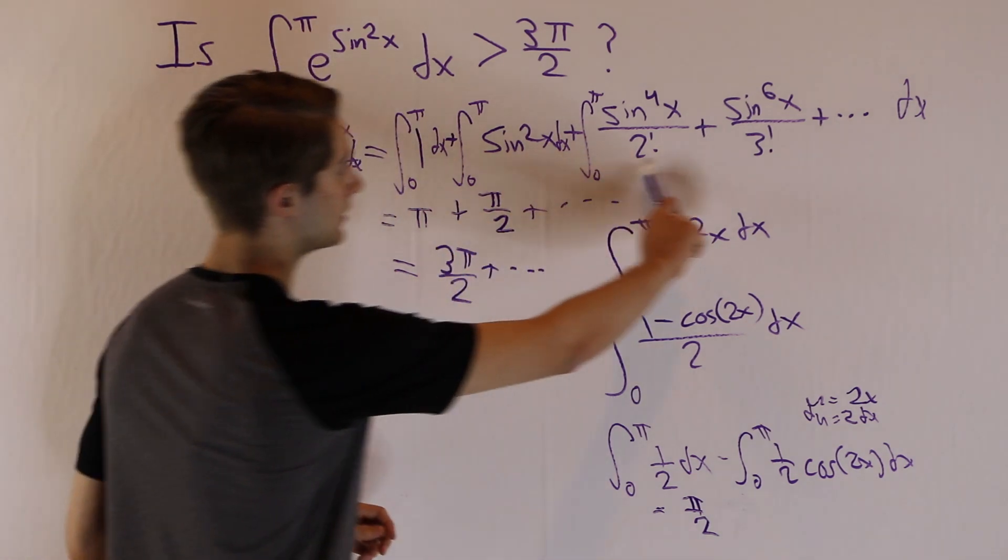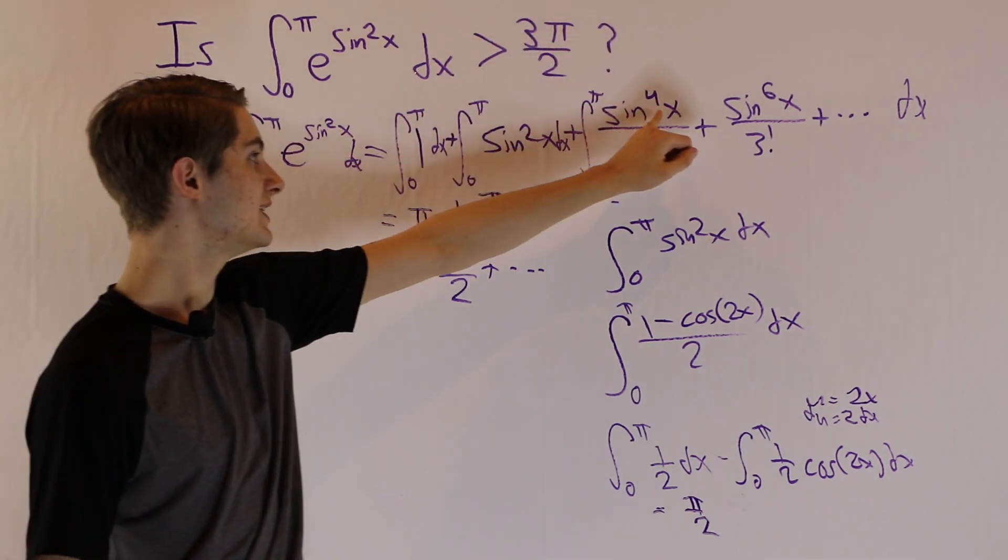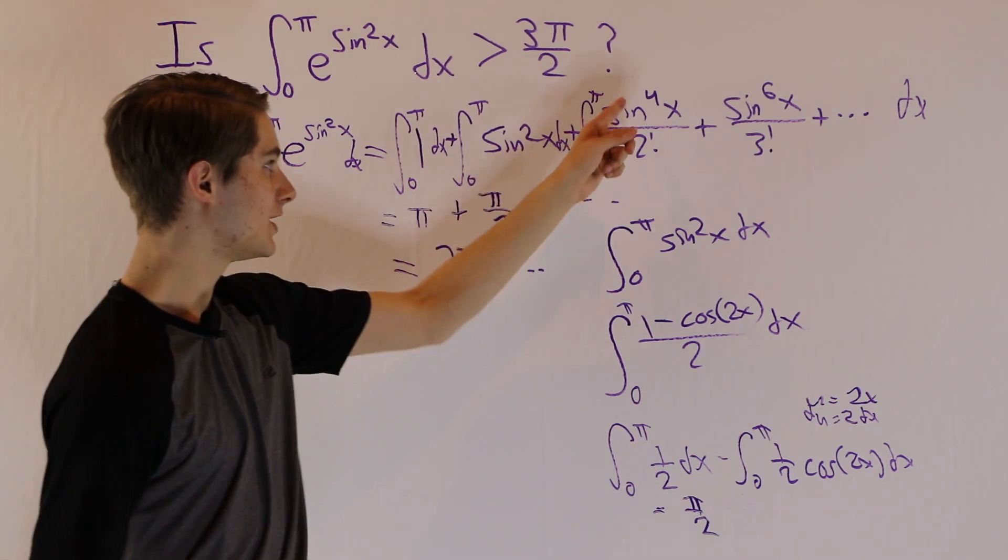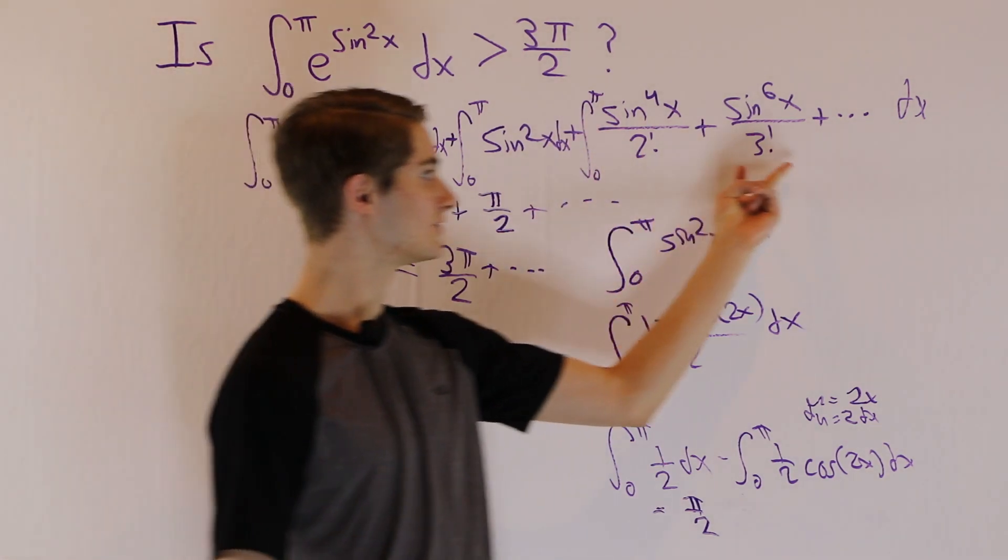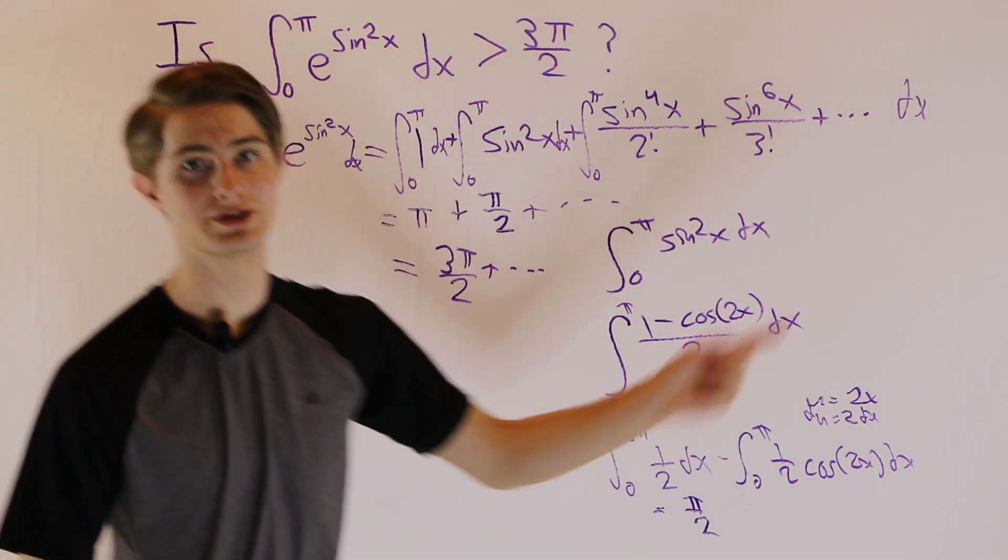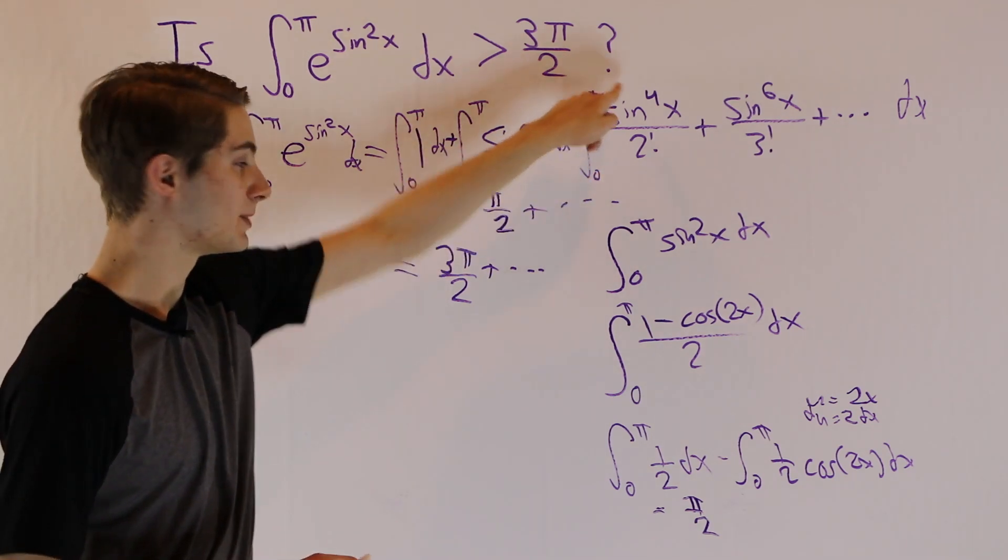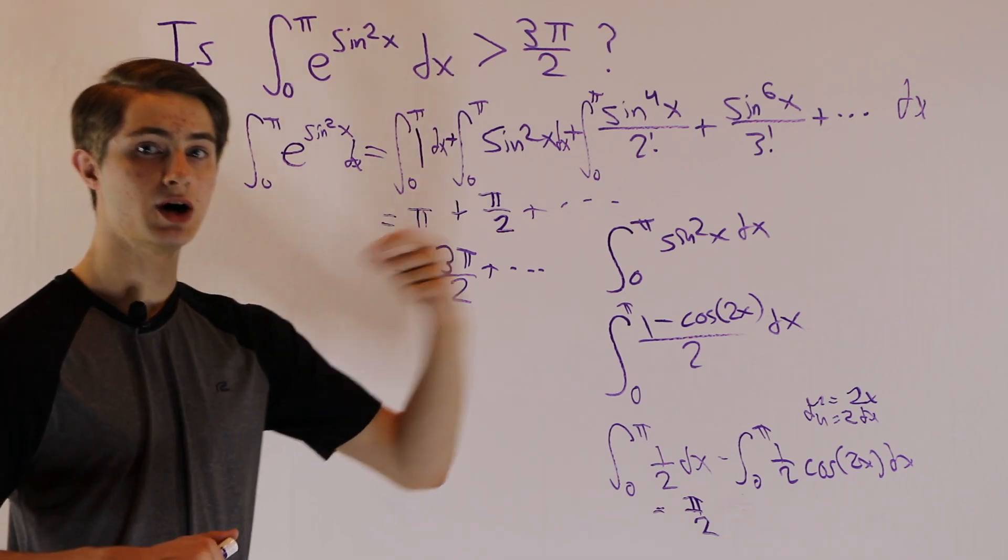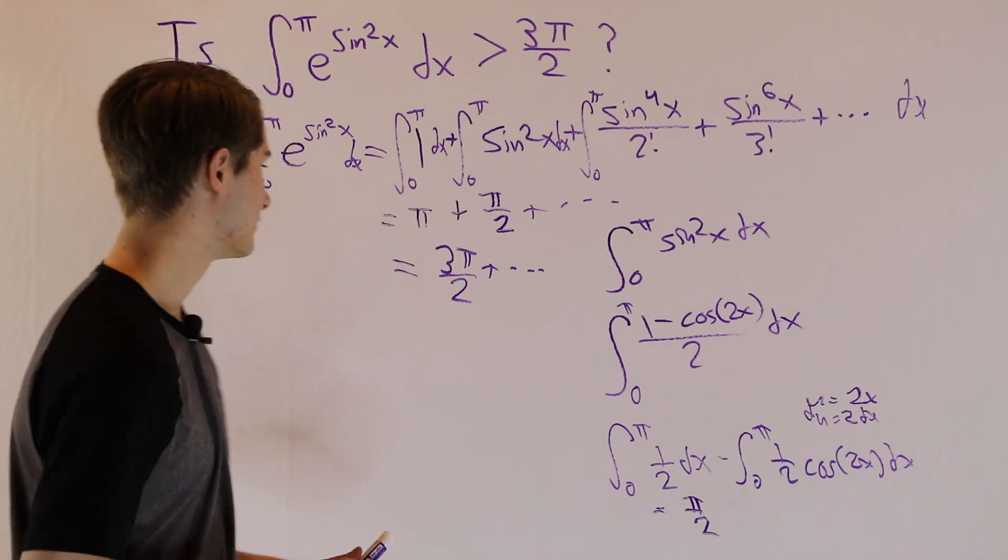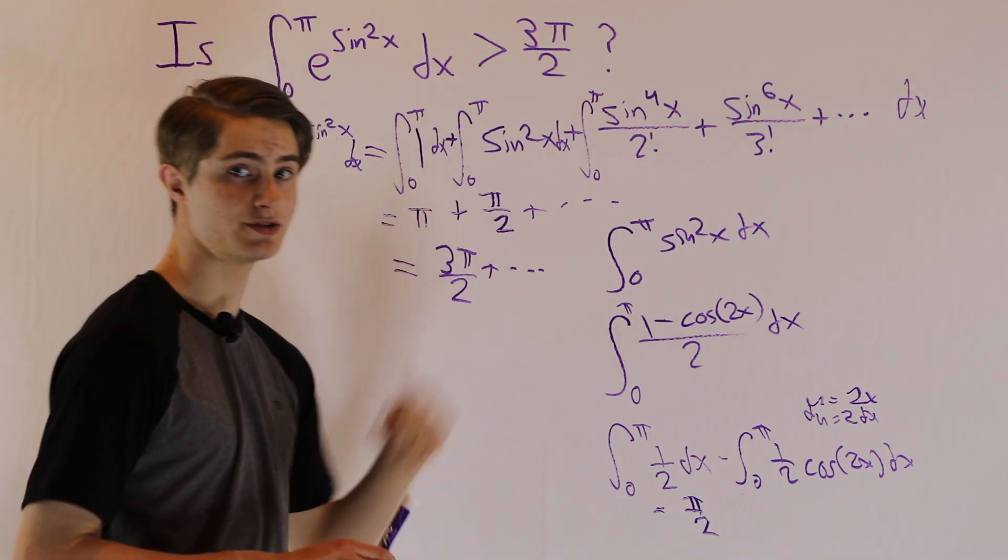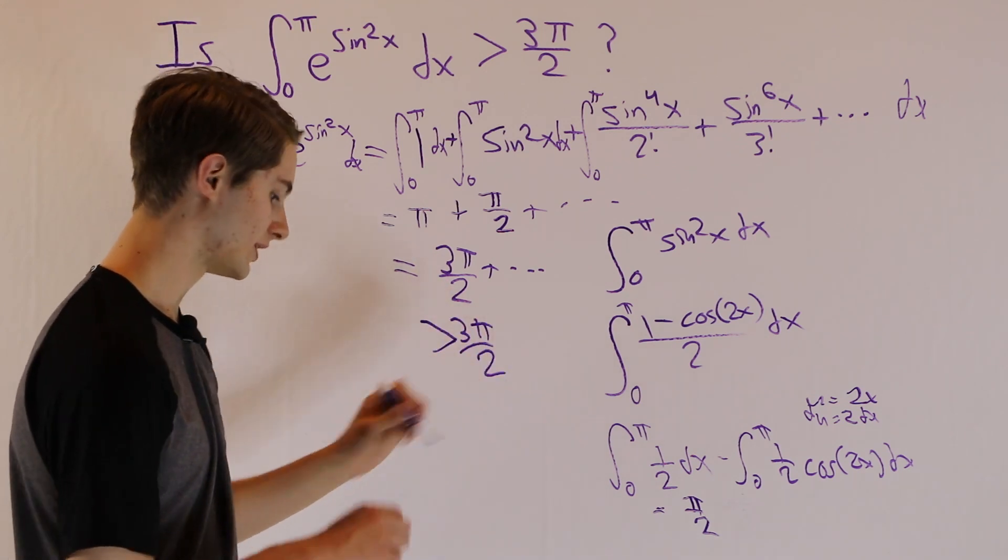And the question is, what is this stuff? Well, we don't know what it is. But we do know that sine to the fourth x, because we're taking an even power here, is always going to be positive. And we're dividing by a positive constant, which means this is still going to be positive, this is still going to be positive. All the rest of the terms are going to be positive. And if we take the integral over 0 to π of some positive number, we're going to get a positive answer out. So whatever this is that we're adding, it's going to be greater than 0. So we're taking 3π over 2 plus some positive number, which means our result is going to be greater than 3π over 2.